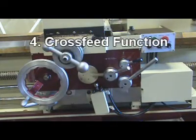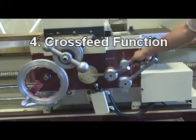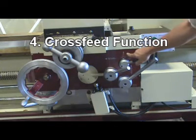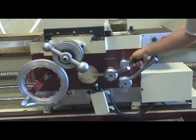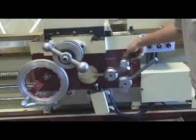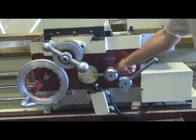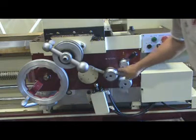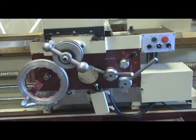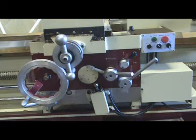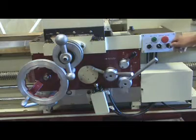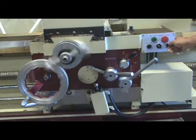Step 4: Put the Control Lever to Cross Feed Function. Choose Rapid Feed Selection to In or Out.